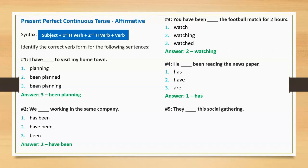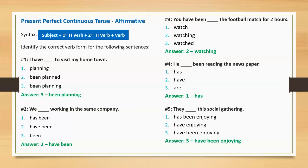Sentence five: 'They blank this social gathering.' Option one: has been enjoying. Option two: have enjoying. Option three: have been enjoying. Correct answer: have been enjoying. Full sentence: 'They have been enjoying this social gathering.'